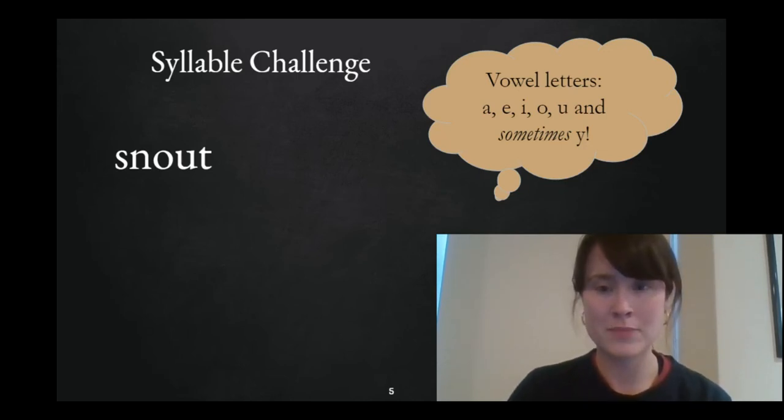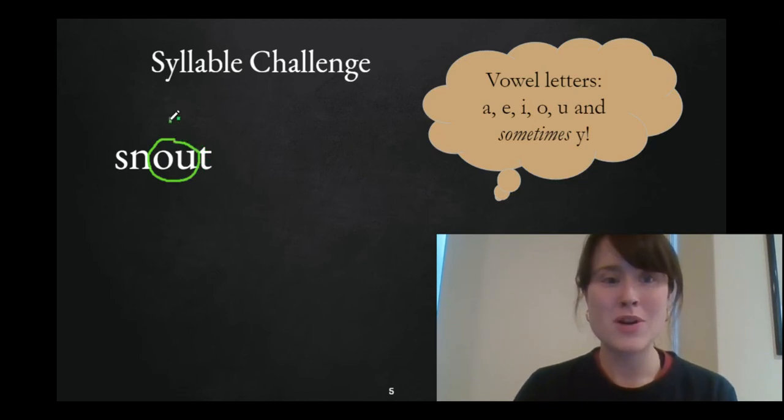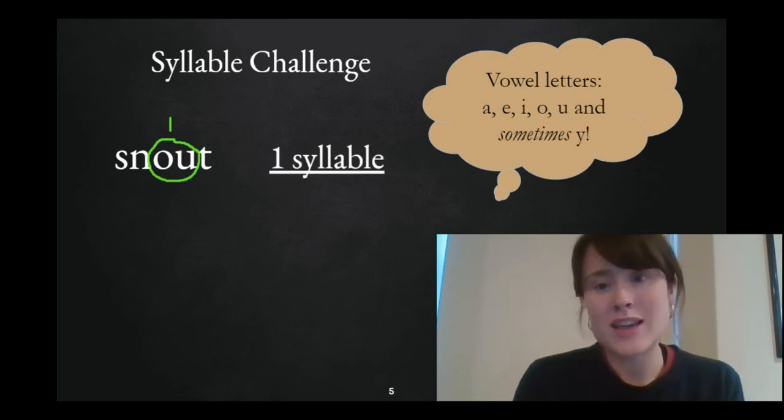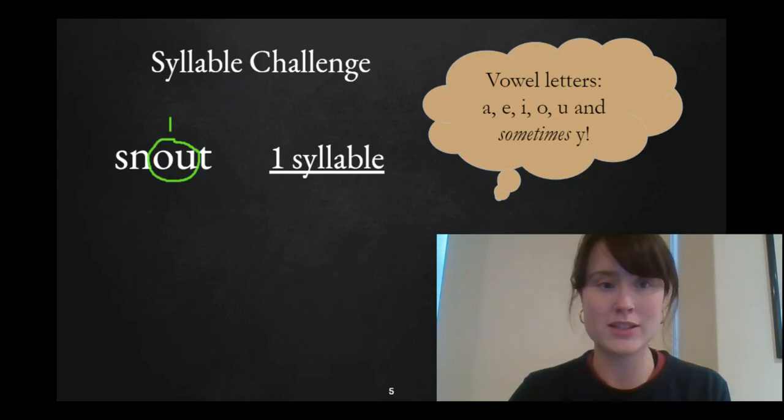All right. Go ahead and write down your first syllable challenge word. Remember we're not circling any old chunk. We're only circling the vowel letters or the vowel teams. That will tell us how many syllables are in the word. All right. What did you circle? Ooh, you did not get tricked. O-U gets one circle because O-U works as one vowel team. It makes one vowel sound. Ow. So if there's one vowel sound in this word, then how many syllables are there? Good. There's only one syllable because every syllable gets one vowel sound. Nice job, friends.